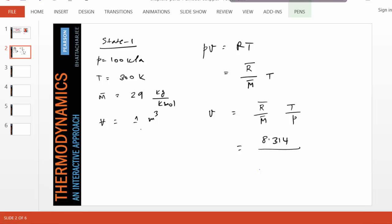R is R bar over M bar. So if you do the calculation, you can show that R turns out to be about 0.287. Temperature is 300, pressure is 100. So 0.287 times 3, and that gives us a specific volume of approximately 0.86.